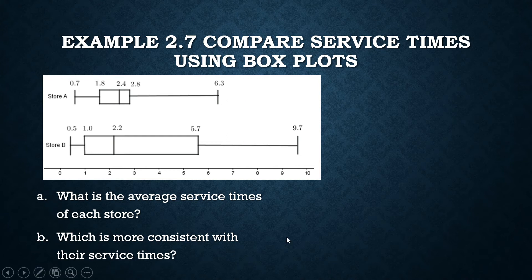Which is more consistent with their service times? How do you interpret consistency? When there is a wide scattering of data values, if your service times are varied, they are not consistent. When there is less variation in your service times, the service time is more consistent. What ought to be our measure for determining which is more consistent with the service time? We can use the IQR, the interquartile range.